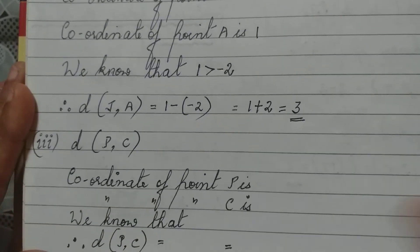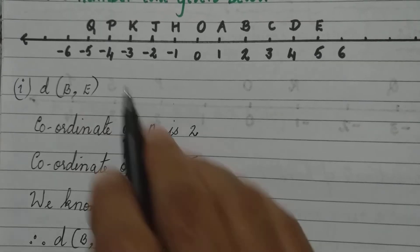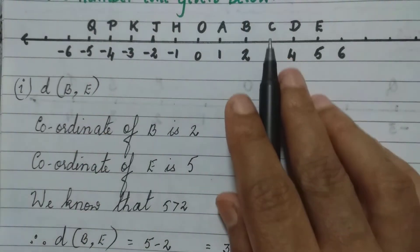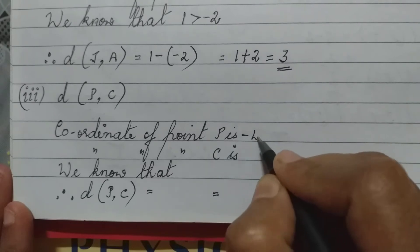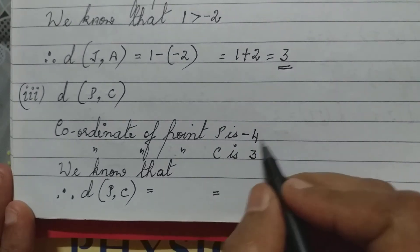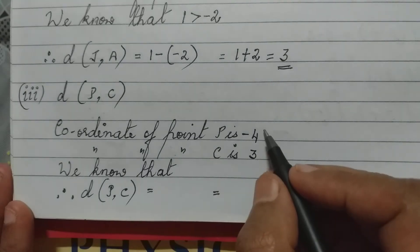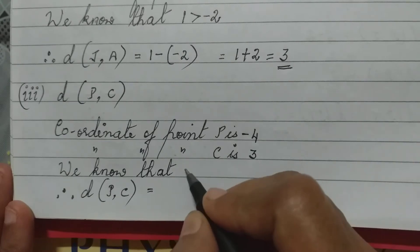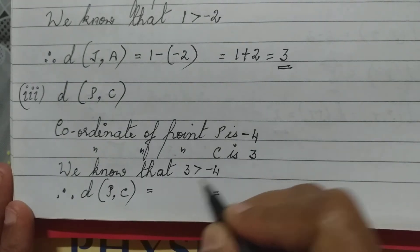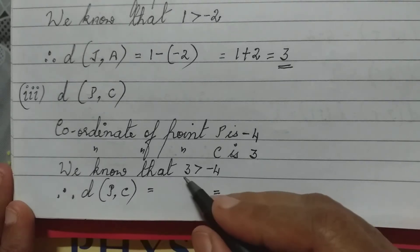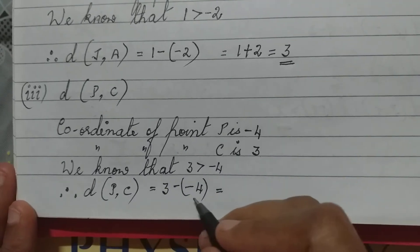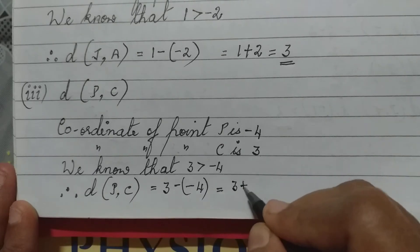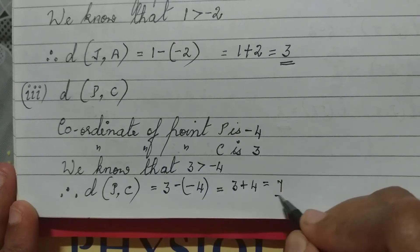Distance between points P and C. The coordinate of point P is minus 4, and the coordinate of point C is 3. The positive number is always greater than the negative number, so 3 is greater than minus 4. Therefore, the distance between P and C is 3 minus (minus 4), which is 3 plus 4, equal to 7.